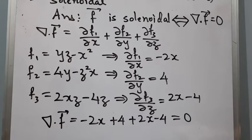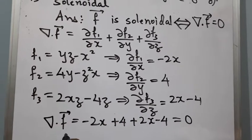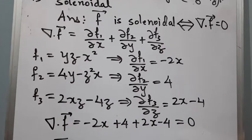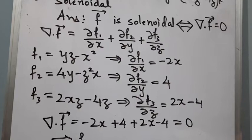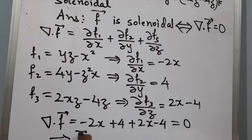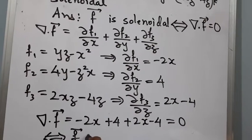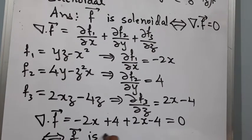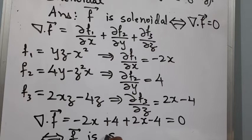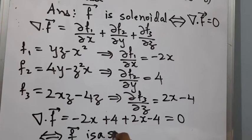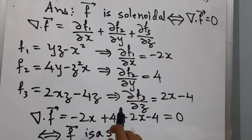Since divergence of the vector is 0, we have f is a solenoidal vector.